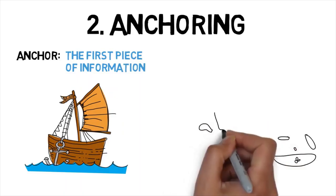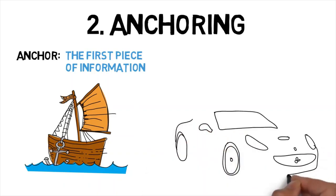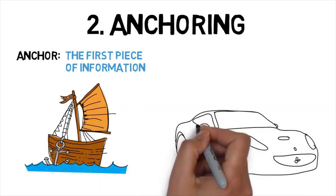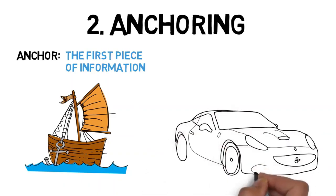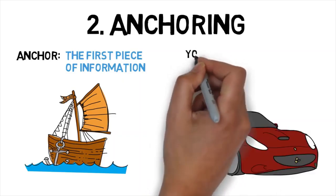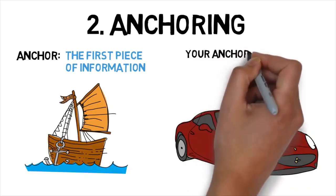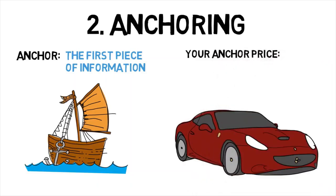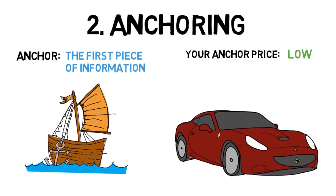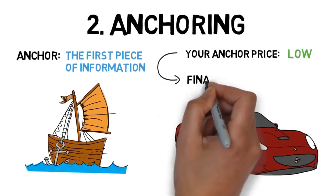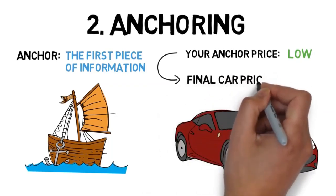Say that you're negotiating a deal with a car dealer. You really want the car, but it looks expensive. Thus, when you first speak with a car dealer, you quickly provide a very low asking price. After all, you want to buy the car cheaply. This initially low proposition for the price of the car anchors the negotiation to that value. The dealer probably won't agree to your suggested price, but that doesn't matter because the anchor is already set.